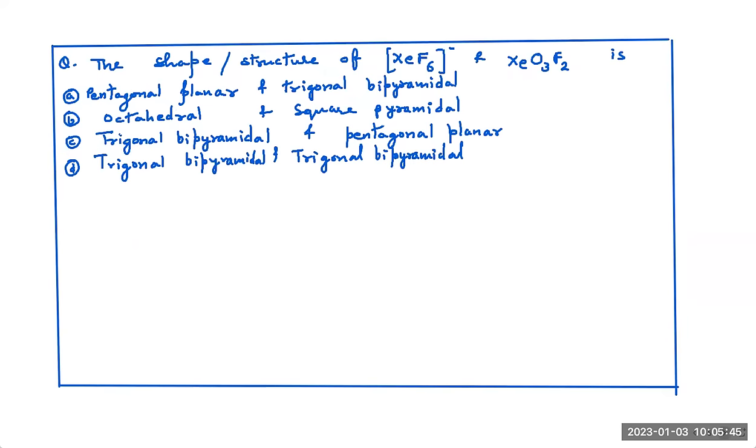The next question children is. The shape and structure of XeF6 minus and XeO3F2. XeF6 minus. No, I think the question has some error. Definitely because XeF6 minus. No, XeF6. This is XeF5 minus. Now, we take XeF5 minus. Number of electrons in valence shell of xenon is 8. In that of fluorine is 7. But there are 5 fluorines. 7 into 5. Plus one negative charge. We are adding. Not multiplying here. One negative charge is added. So, it becomes 8, 7 by 35.